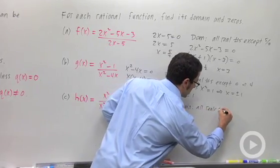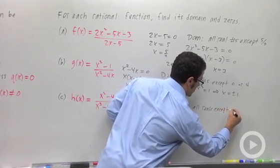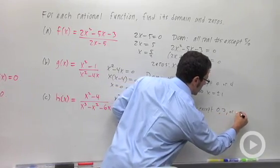So the domain will be all real numbers except those three. All reals except 0, 3, or negative 2.